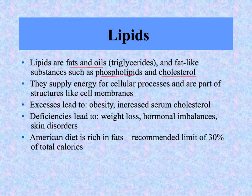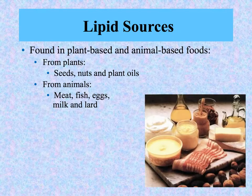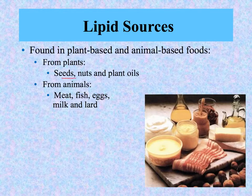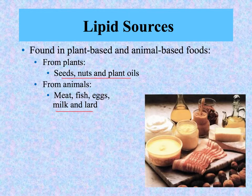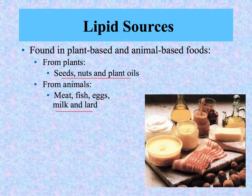The American diet is extremely rich in fats — there's no problem getting enough lipids, and so we're actually recommended to limit intake to less than 30 percent of total calories coming from fats and oils. Lipids can be found from both plant-based and animal-based foods. Seeds and nuts produce oils from plants, and you see fat visibly on meat, cream, and lard from pig fat. We do need a certain essential amount of fatty acids — the components of lipids — but we're really talking just a few tablespoons a day.